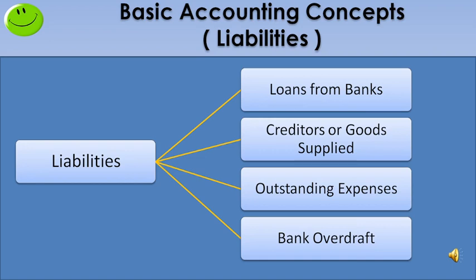Next, bank overdraft. Suppose our bank balance is 50,000 and we issue a cheque for 51,000. The bank passes the cheque and collects the deficit amount with interest on our next transaction — that is also a liability. Please note that bankers do not provide this facility to everyone; it is available to some customers having a current account, based on their reputation and security provided to the bank.